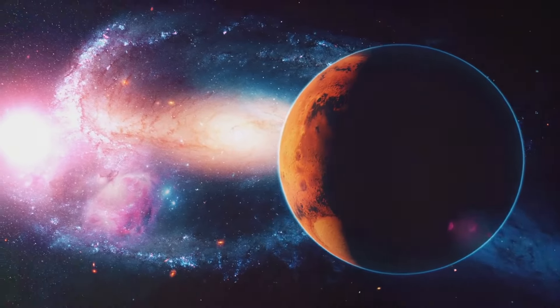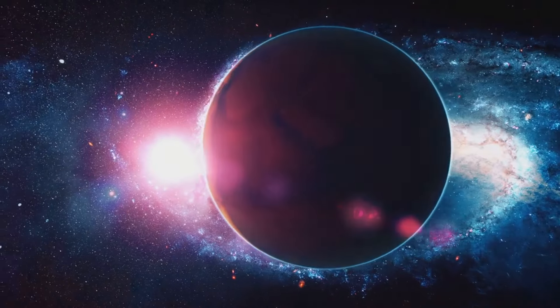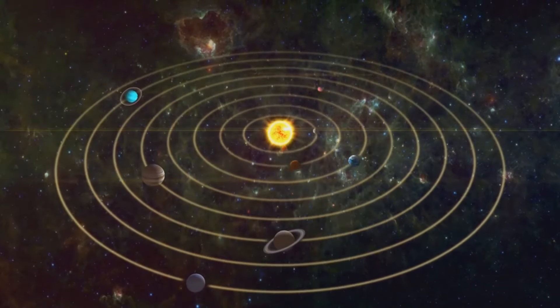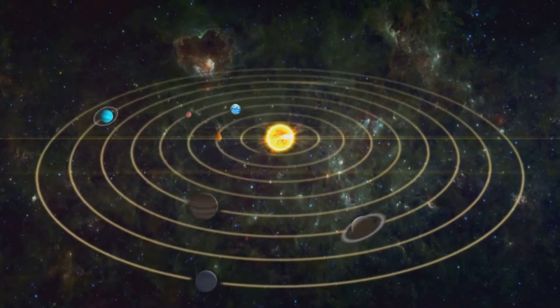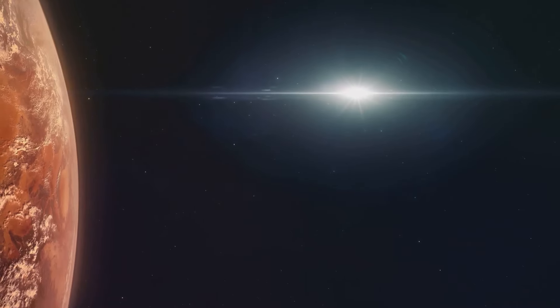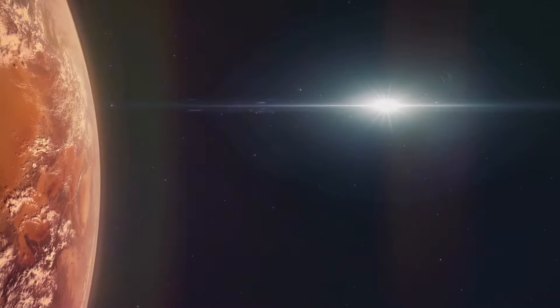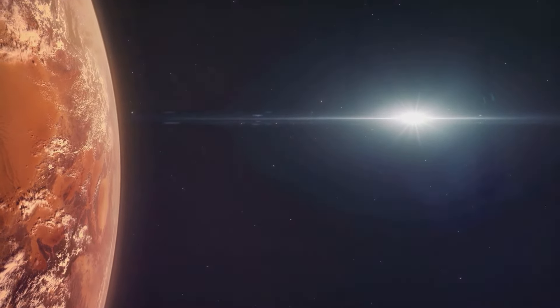The inner solar system is home to four terrestrial planets: Mercury, Venus, Earth, and Mars. These planets, relatively small and composed primarily of rock and metal, share a common origin, forming from the same protoplanetary disk that birthed the sun. Despite their shared history, each planet has evolved unique characteristics, shaped by its distance from the sun, its composition, and its geological activity.